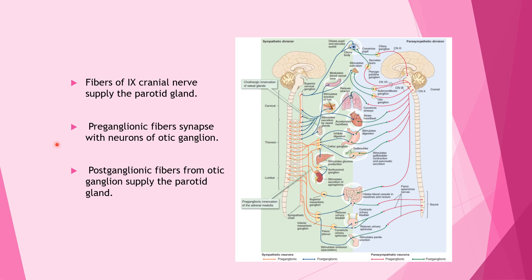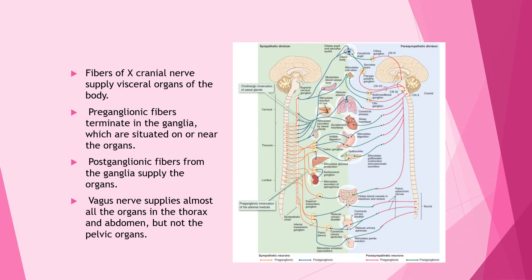Fibers of the 10th cranial nerve supply the visceral organs of the body. Preganglionic fibers terminate in ganglia situated on or near the organs, and postganglionic fibers from those ganglia supply the organs. The vagus nerve supplies almost all organs present in the thorax and abdomen, but not the pelvic organs.